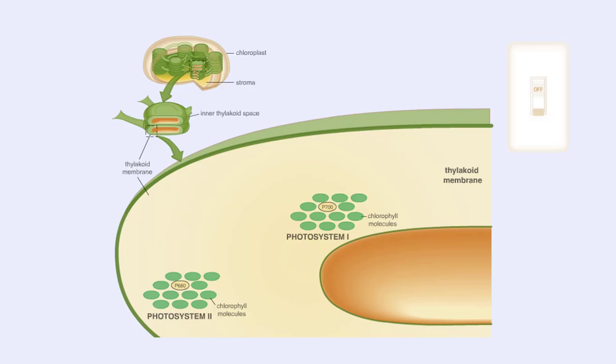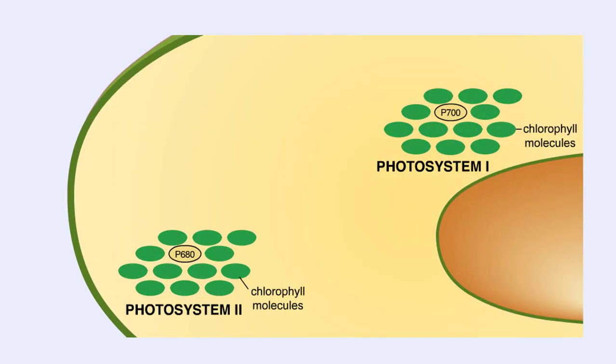You can watch this electron flow by turning on the light switch. Both photosystems work together to harness the energy of electron flow. Light strikes the chlorophyll molecules of photosystem II and electrons are excited. Their energy is passed from pigment molecule to pigment molecule.